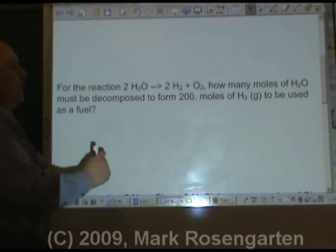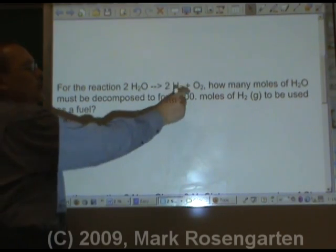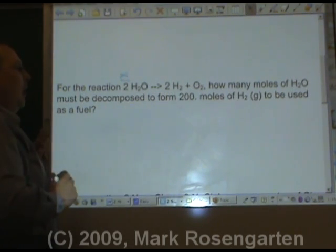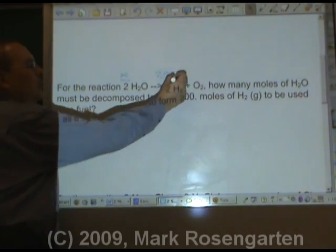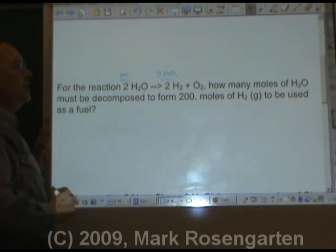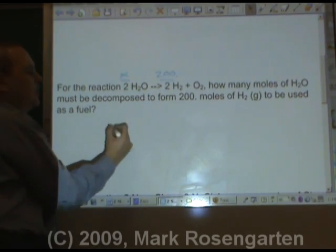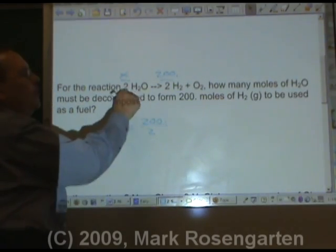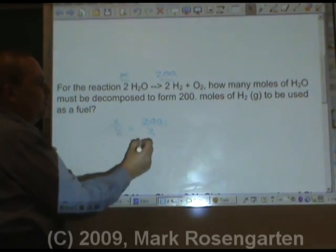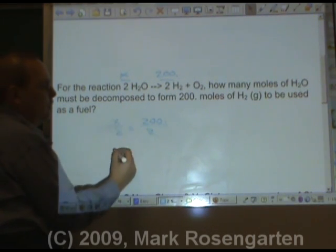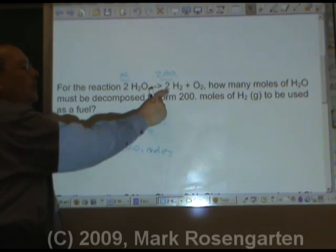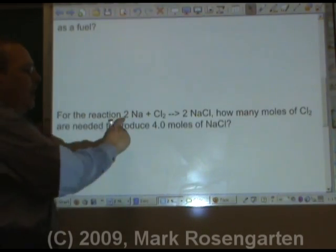For the reaction, 2H2O forms 2H2 plus O2. How many moles of H2O must be decomposed to form 200 moles of H2 to be used as a fuel? X is to two as 200 is to two. Well, two to two is a one to one ratio, so that's simple. Two and the two cancel out, and that gives you X equals 200. 200 moles, right? Because if it's a one to one ratio, it's a 200 to 200 ratio.